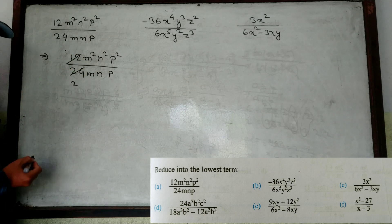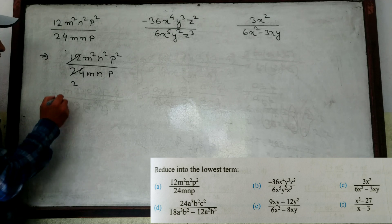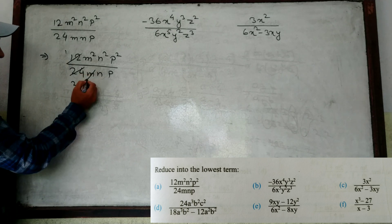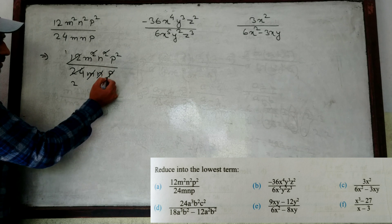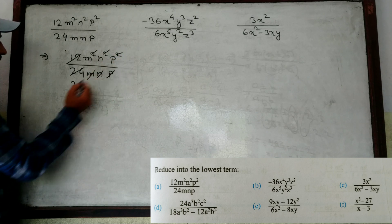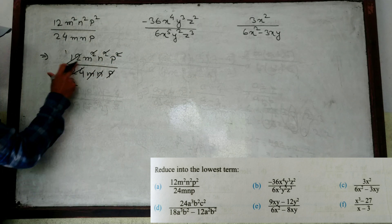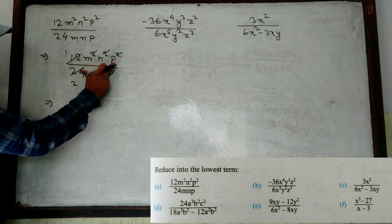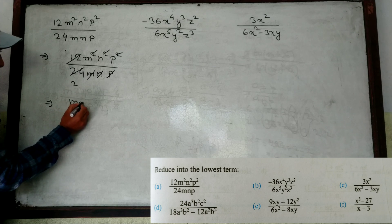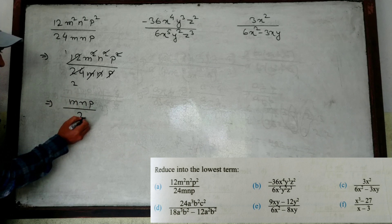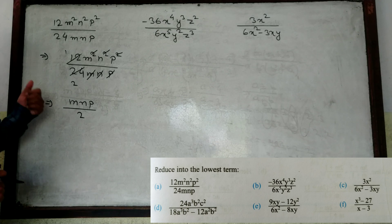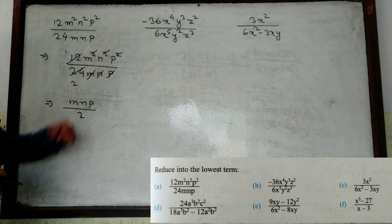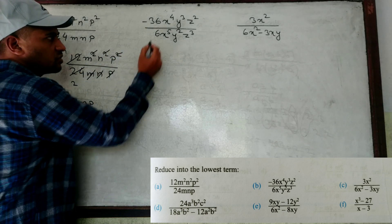12 into 2 is 24, so we reduce. Here M and M cancel, N² and N cancel, P² and P cancel. What is remaining in the numerator is M, N, and P. In the denominator what is remaining is 2. So the answer is MNP by 2.